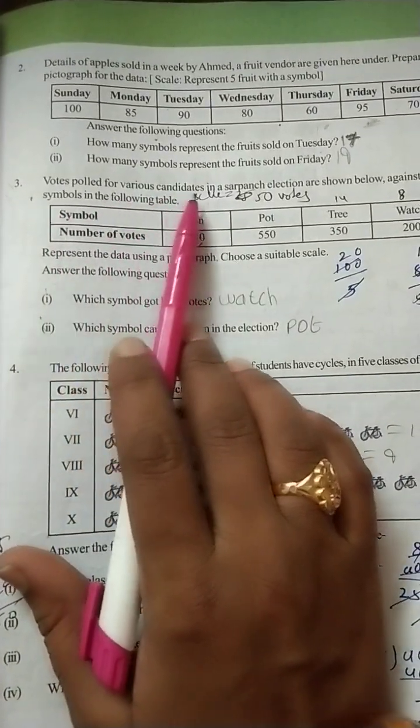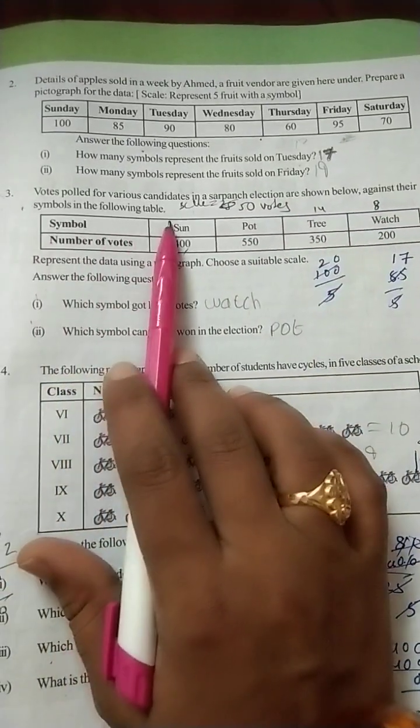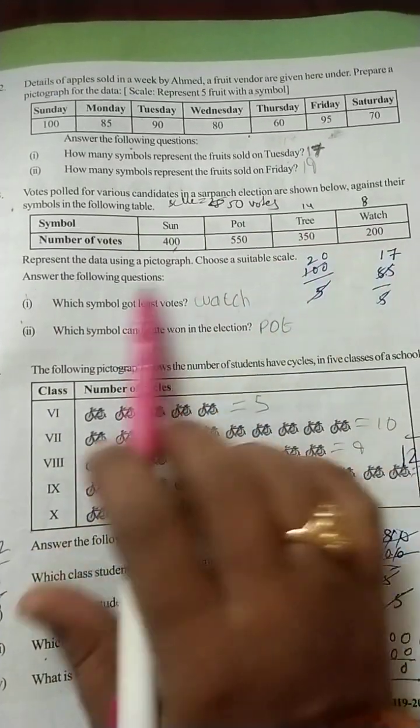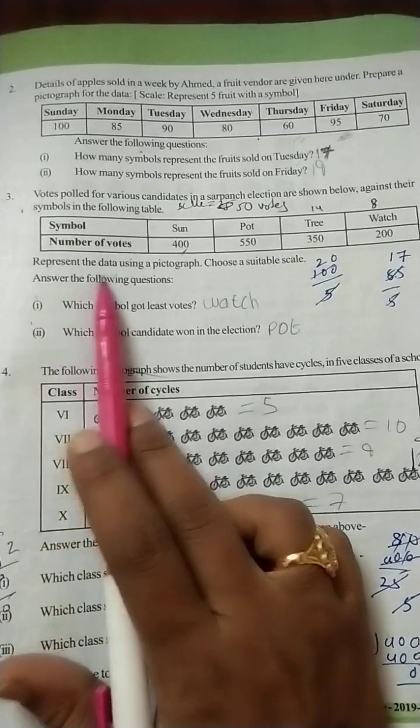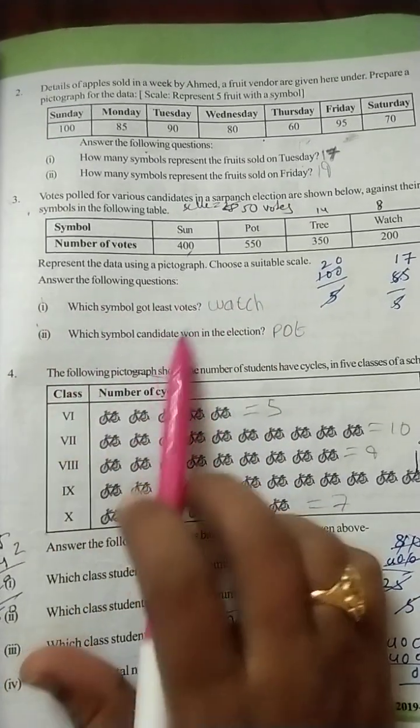Votes polled for various candidates in year serpent selections are shown below, against their symbols in the following table. Symbol: sun, pot, tree, watch. Number of votes: 400, 550, 350, 200. Represent the data using pictograph. Choose a suitable scale. Now answer the following questions.